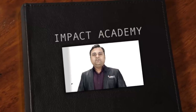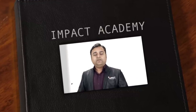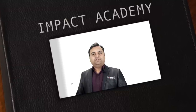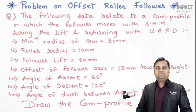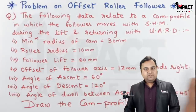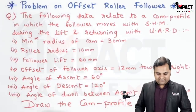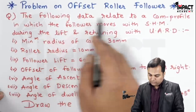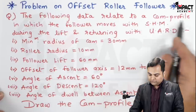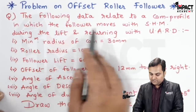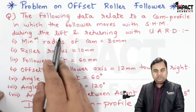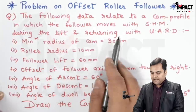Hi friends, in this video we are going to see a problem on offset roller follower. Here is the question — whatever is given I will write in the form of data. It is given the following data relate to a cam profile in which the follower moves with SHM during the lift and returning with UARD, that is uniform acceleration and retardation.